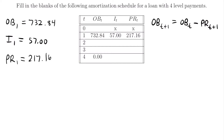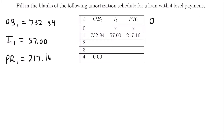So if t equals zero, then the outstanding balance at time equals one is equal to the outstanding balance at time equals zero minus the principal at time equals one. We know what the outstanding balance at time equals one is, and we know what the principal is at time equals one. So if we add this to both sides, we can solve for the outstanding balance at time equals zero. Adding the outstanding balance at time one plus the principal paid at time one gives us the outstanding balance at time zero.